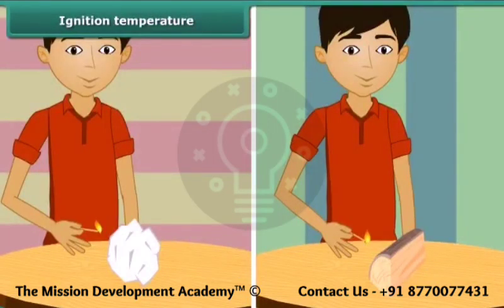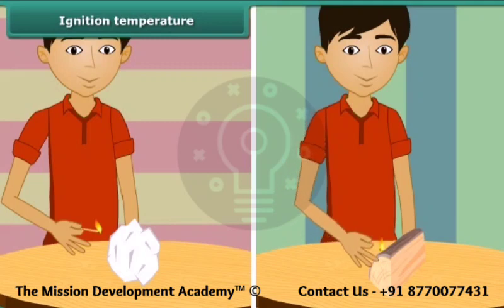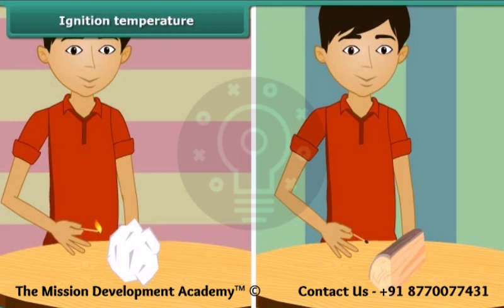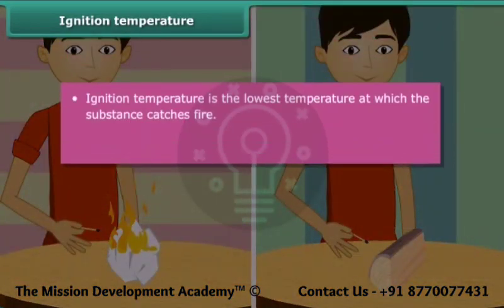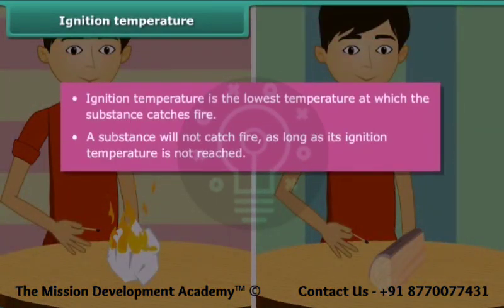We just saw that a paper burns when lighted with a matchstick. Now bring the matchstick close to a piece of wood. The piece of wood does not catch fire. One lighted matchstick is not able to burn the piece of wood, but a piece of paper burnt quickly. This is because the piece of wood has not reached its ignition temperature. Ignition temperature is the lowest temperature at which a substance catches fire.